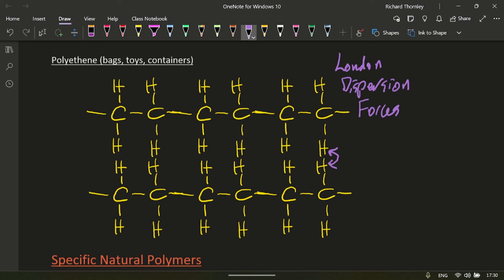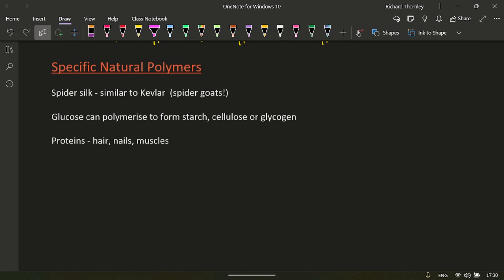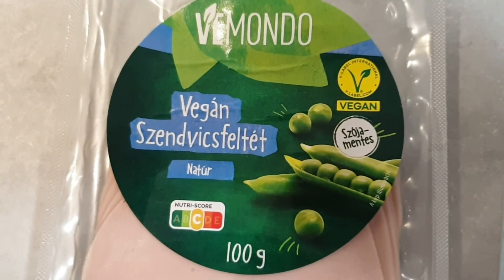Specific natural polymers. There doesn't seem to be much detail needed here. Spider silk, well that's similar to Kevlar. If you've not heard the story of spider goats, I would advise you go and look it up right now, that's kind of fun. Glucose can polymerize to form starch, cellulose, or glycogen. Proteins are used for hair, nails, and muscles. And we're done. No animal was harmed in the making of this video.